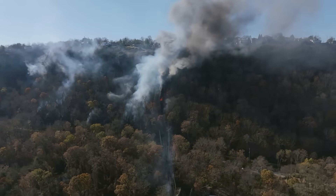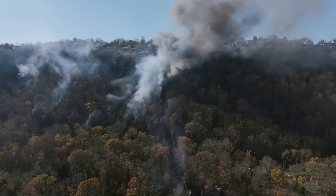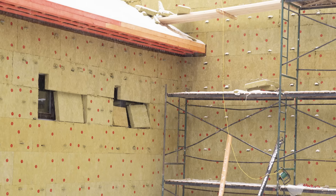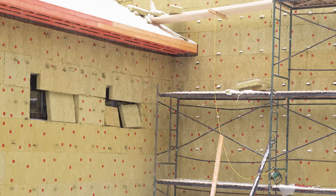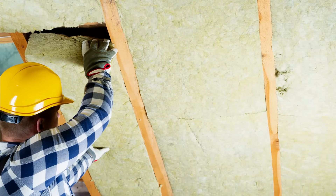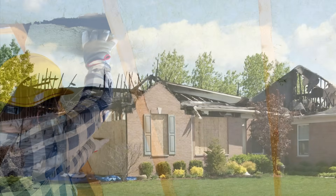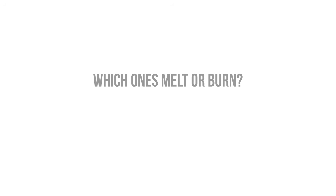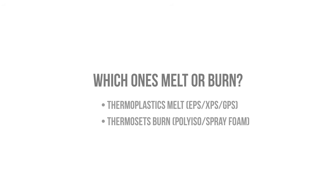Wildfire zones also drive the insulation specifications of many projects. You need to specify insulations that won't burn or melt. Exterior mineral wool is highly recommended for fire protection — it's basically a fire blanket around the entire building, as it's non-combustible and has a very high melting point. Interior rock wool or fiberglass is also highly recommended in the cavities so that fire doesn't easily travel within the framing. Avoid foam products in these regions, as foam burns hot and smokes. Thermoplastics like polystyrene melt, while thermosets like Polyiso and closed-cell spray polyurethane foam burn.